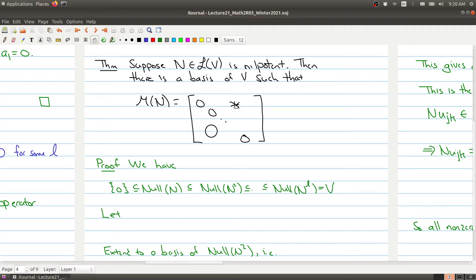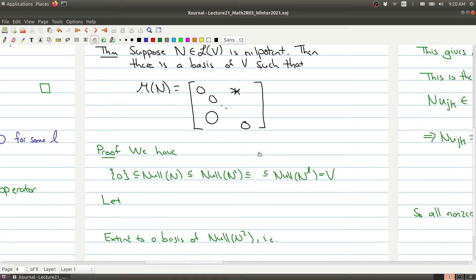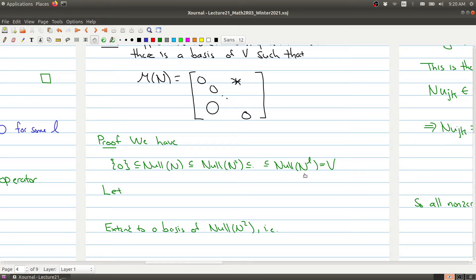Let's quickly walk through the proof. We have this chain of inclusions, and this follows from the last lecture. The zero subspace is in the null space of N, which is in the null space of N squared, and so on, and this last equality comes from the fact that N is nilpotent. Now let u11, u12, up to u1n1 be a basis of the null space of N.